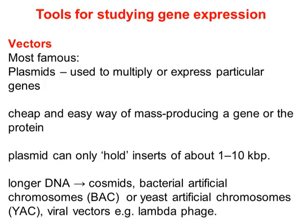الـ plasmids طريقة رخيصة وسهلة للإنتاج الكبير لجين معين، لكن عيبها أنها تتحمل إدراجاً بين 1 و10 kilobases فقط. إذا كان الـ DNA أطول من ذلك، نضطر لاستخدام الـ BAC أو YAC — وهي artificial chromosomes — أو viral vectors مثل الـ lambda phage.